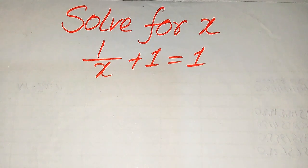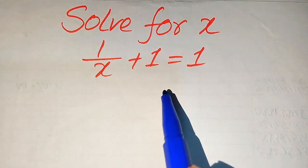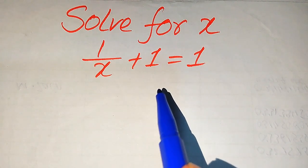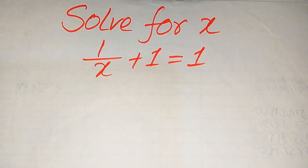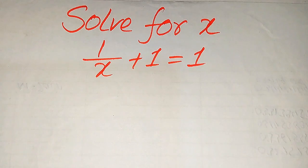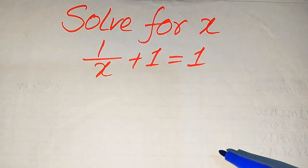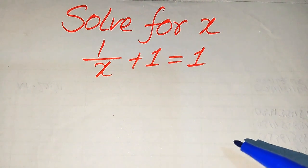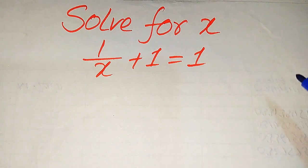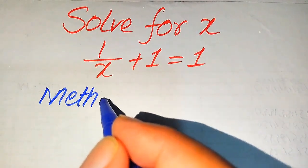Hello everyone. How to solve this problem for the values of x if we have 1 over x plus 1 equals 1, and we solve this problem for the values of x only. This is a linear equation of exponent 1. We will find all the roots of this equation, and at the end we will verify which roots are solutions and which are extraneous roots. We will solve this problem using two methods.